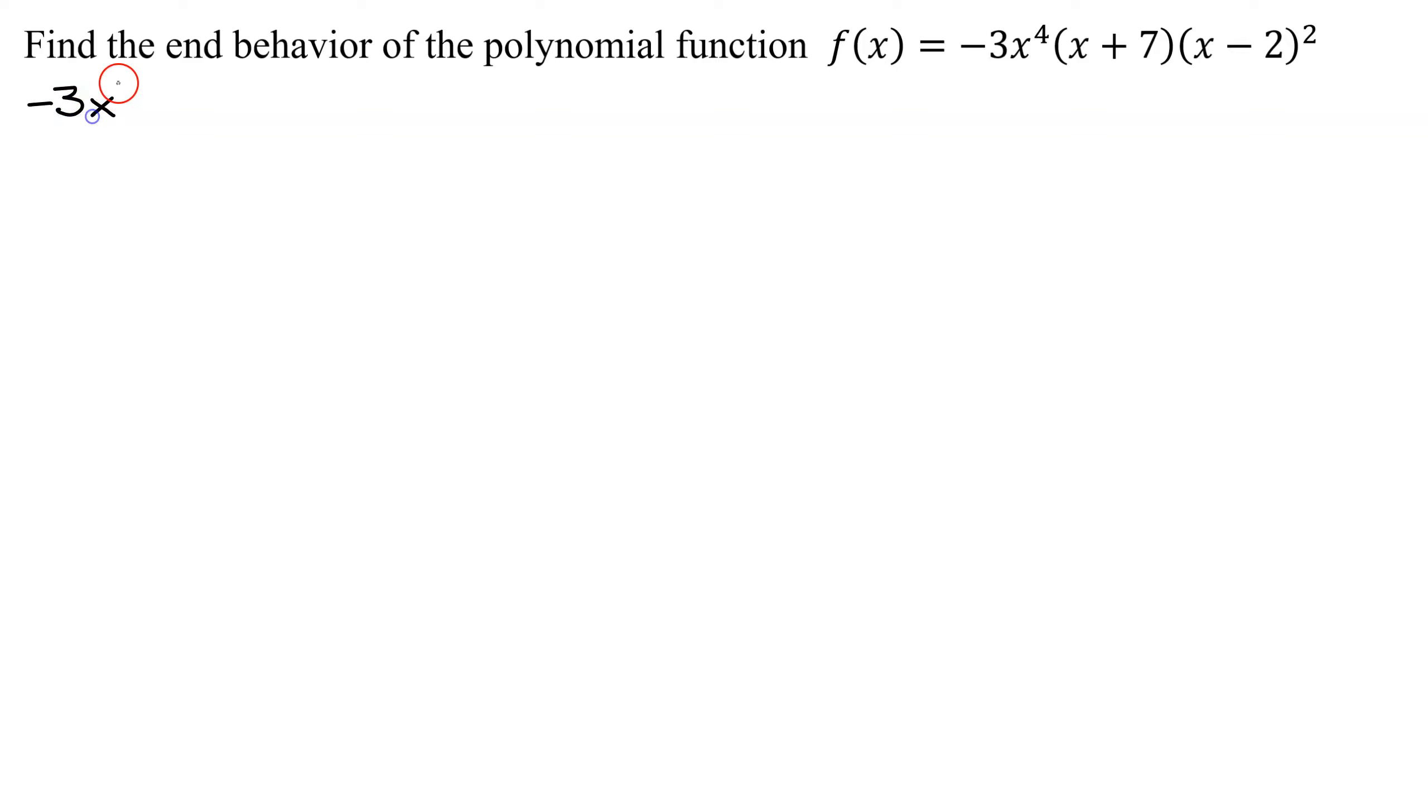I'm going to have -3x^4 times the term with greatest degree in x+7, which is just x, times the term of greatest degree in x-2, which is just x. But don't forget, that is going to be all squared.